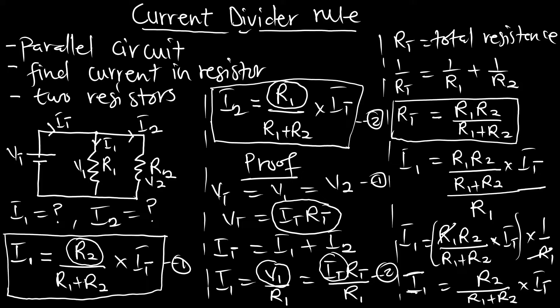This is where we got the formula for i1. It is the same for finding i2 - you can also prove it and get the same formula. This is very simple for the current divider approach. You can also do this for three resistors, but here we are focusing on two resistors. In the next episode we will talk about three resistors. Let's use this to work some examples.